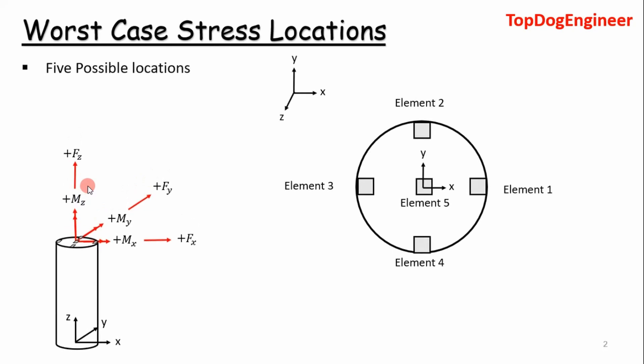The first thing you want to do is identify the worst case stress locations. In this case, our worst case stress locations are going to be on the outside of the shaft at elements one, two, three, and four. And then at the center at element five, where we will see our worst case shear stresses acting.